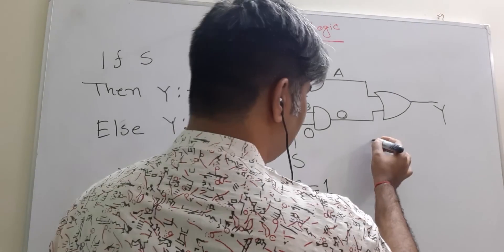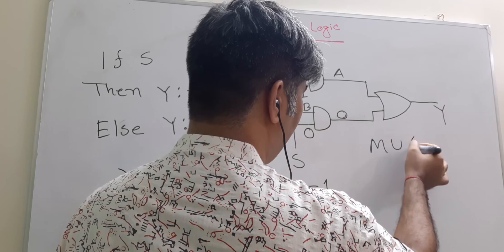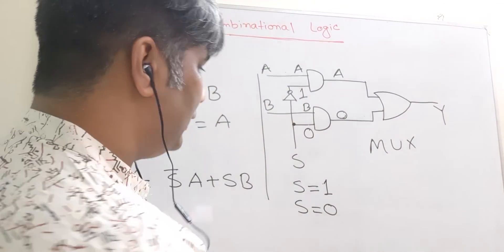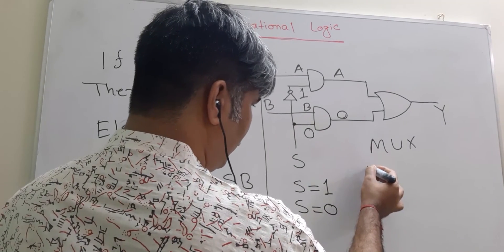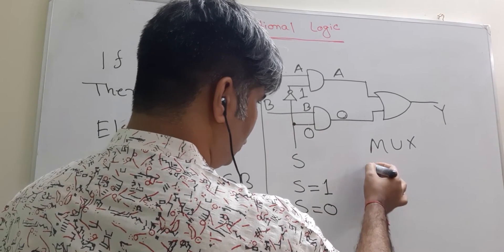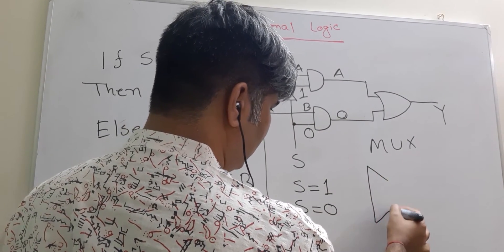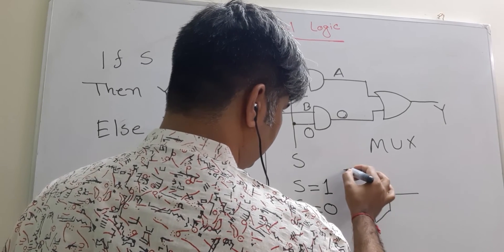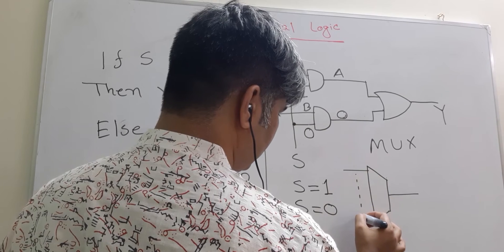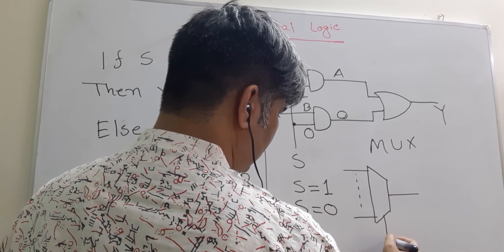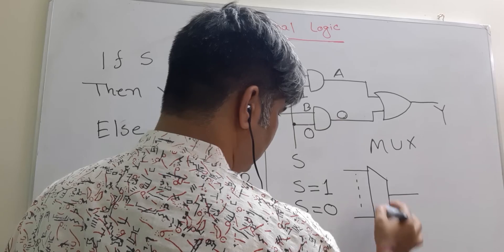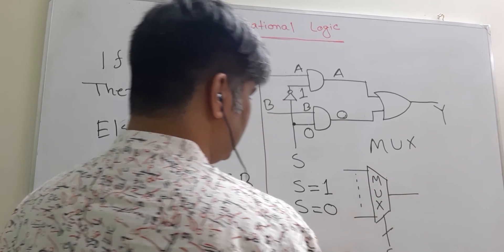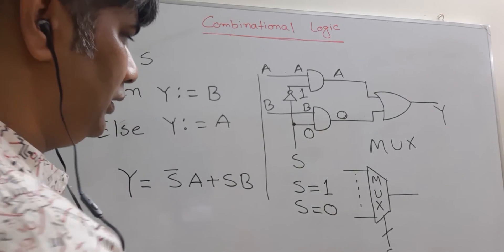In short, we write it like this: M-U-X, mux. And the block diagram for mux in the rest of the course, we will be using something like this. And this is our selector, this is our mux, this is our multiplexer.